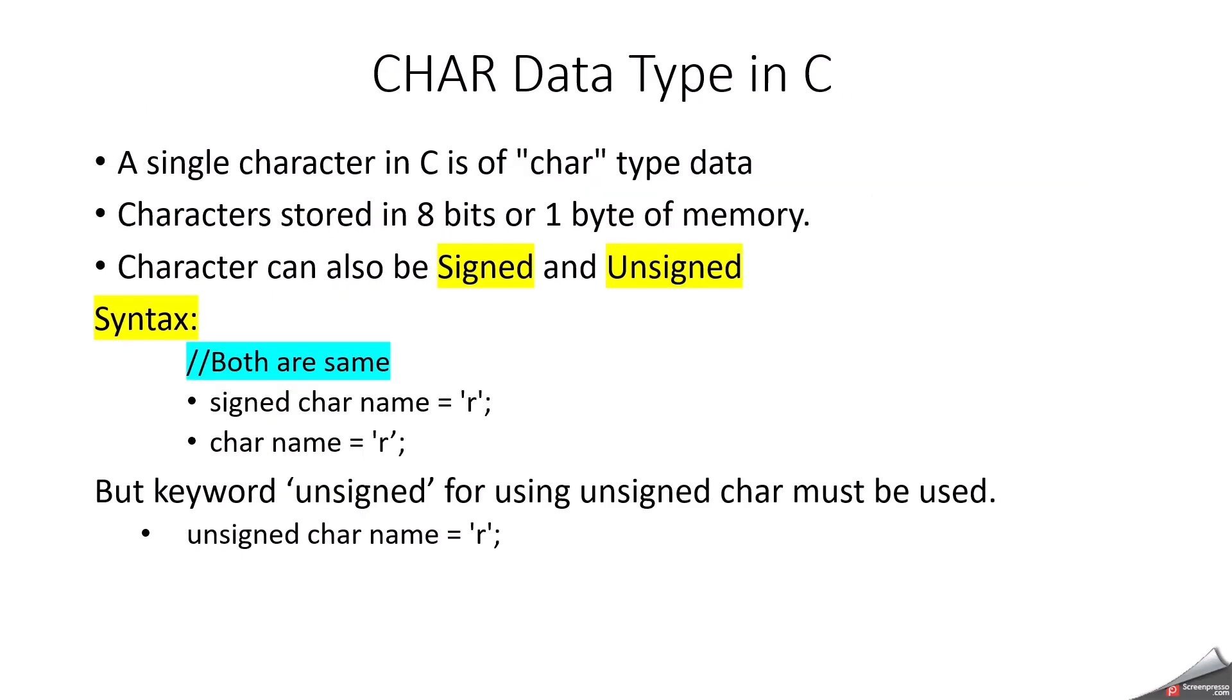We can discuss now about each and every step with more clarity. First we can start with the character data type. Character data type holds a single character. Character is stored in 8 bits or 1 byte of memory. 8 bits equals 1 byte. And character can also be signed and unsigned. You can see the syntax now. Signed character name or character name. These both are the same. If you don't mention anything then automatically or by default it will be considered as signed. But we need to mention the keyword unsigned for using the unsigned character.